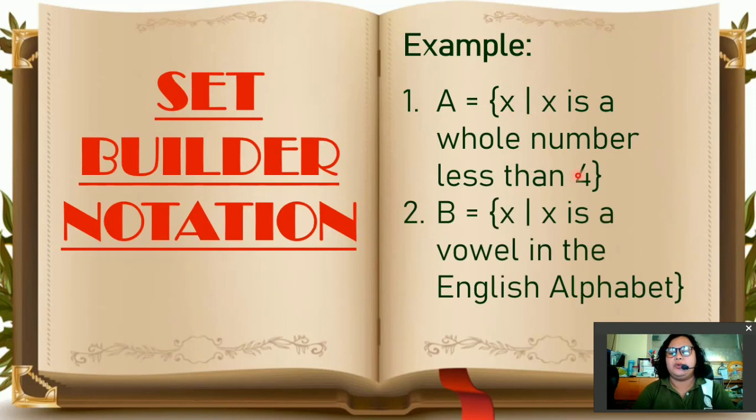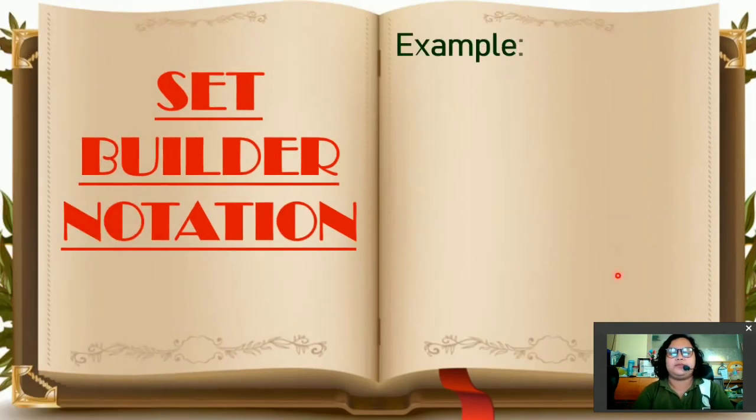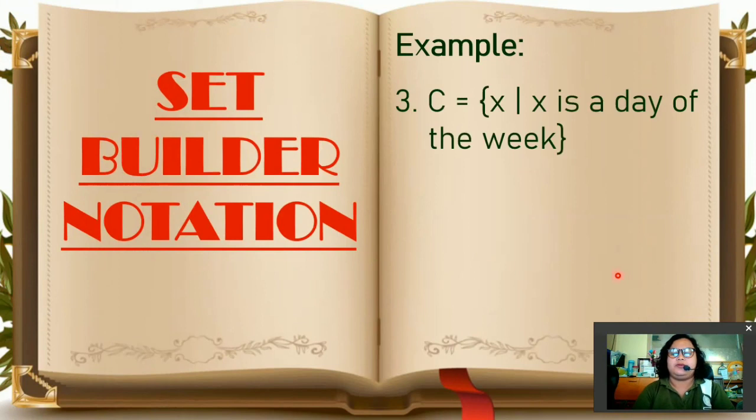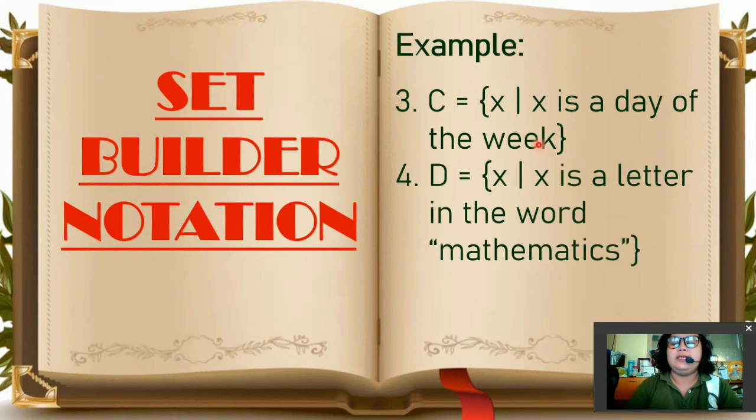Number 2. Set B. The set of X such that X is a vowel in the English alphabet. Number 3. So it would be set C. Read this as X such that X is a day of the week. Last example. Set D. X such that X is a letter in the word mathematics.